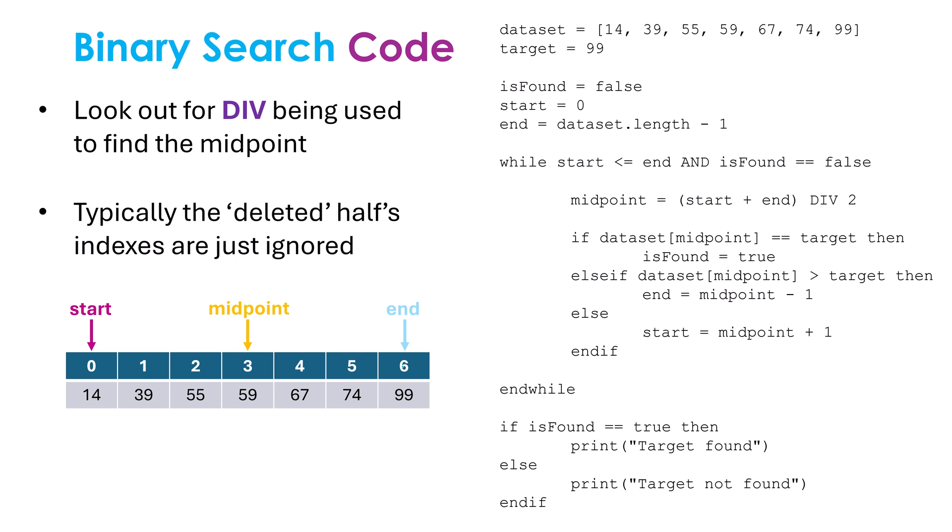You then are going to move either the start or the end to shorten our list by half as we go. So in this particular example, because 99 is bigger than 59, we can ignore the left-hand side. So we just shift up the start to be after the last midpoint's index. At this point in this particular example, the next iteration, they all converge at the same index because we end up finding 99 at index 6.